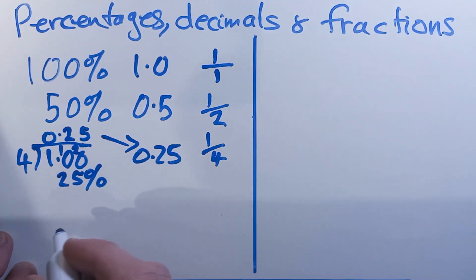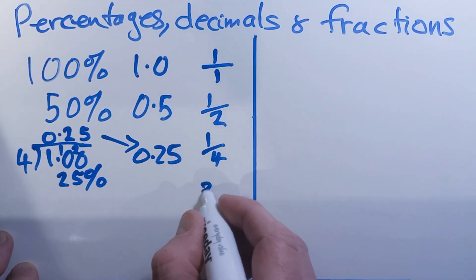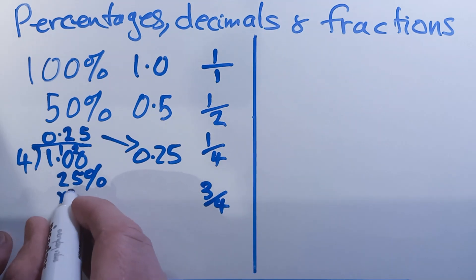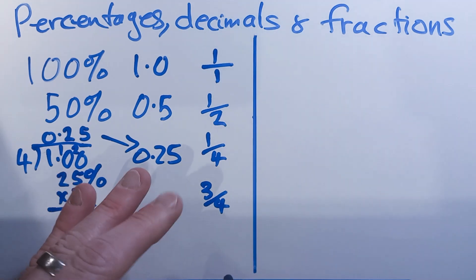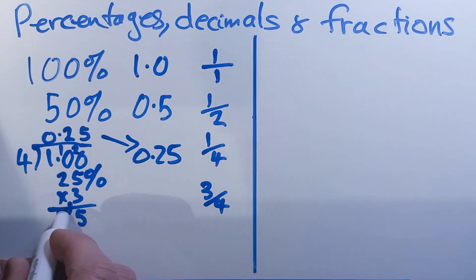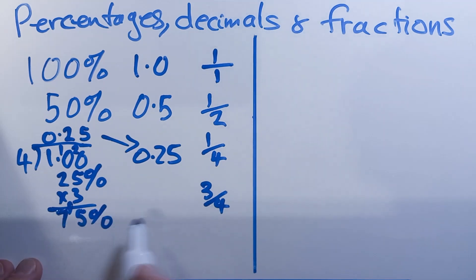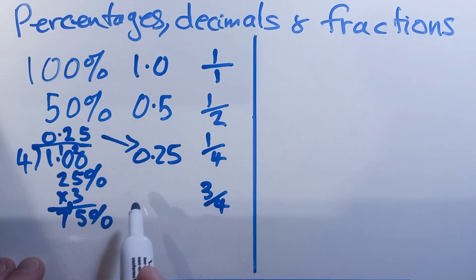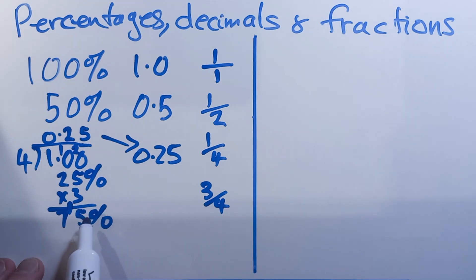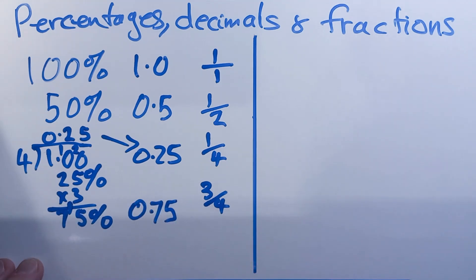Now, what about if we had 3 quarters? Well, that's just going to be 3 lots of 25, since 1 quarter is 25%. So 3 times 25: 3 times 5 is 15, carry 1, 3 times 2 is 6 plus 1 is 7 — so we get 75% for three quarters. And the decimal: one way to get the decimal is to take the percentage and move the decimal point two places. So with 75%, the decimal point moves once, twice — we get 0.75.